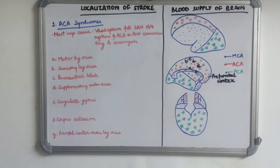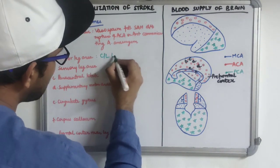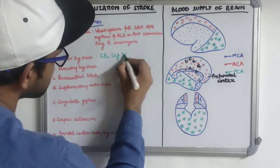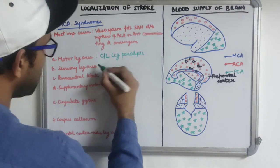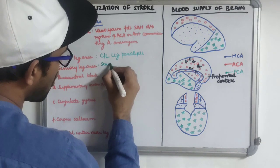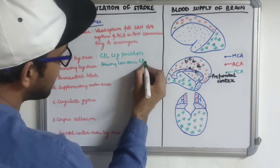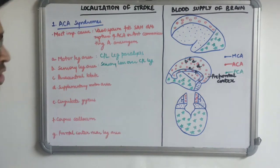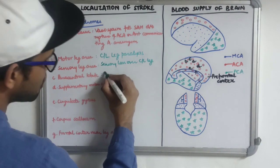Due to involvement of the motor leg area, there is contralateral leg paralysis. Similarly, due to involvement of the sensory leg area, there is cortical sensory loss over the contralateral leg. Due to involvement of the paracentral lobule, which is the highest center of micturition, there is urinary incontinence.